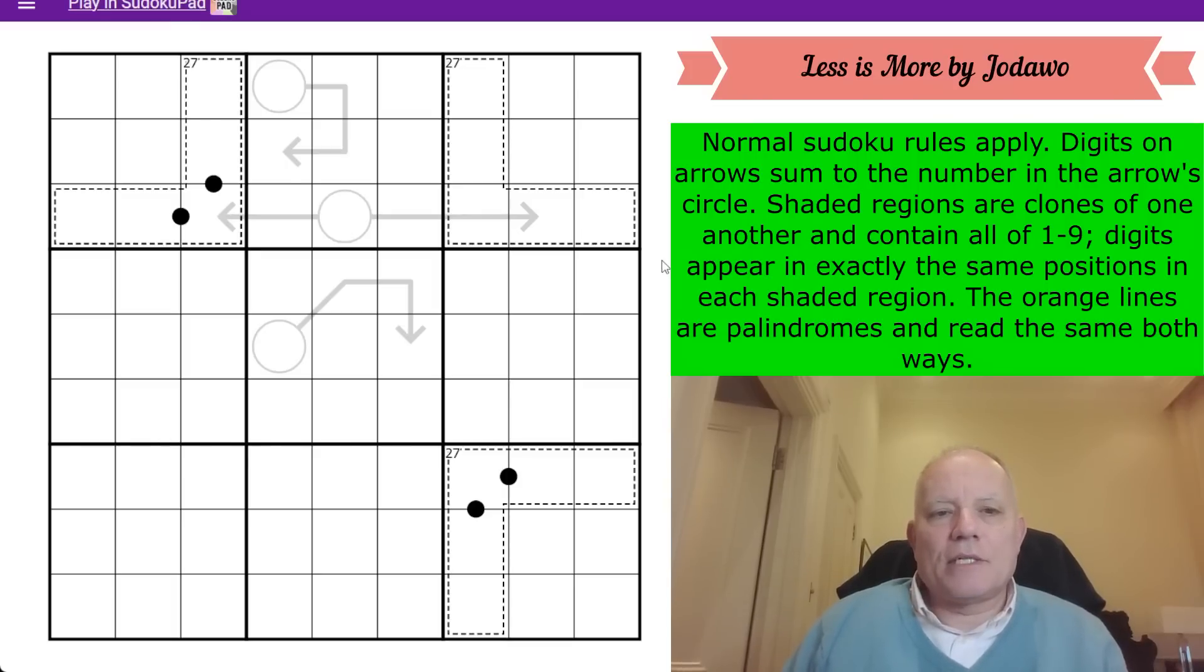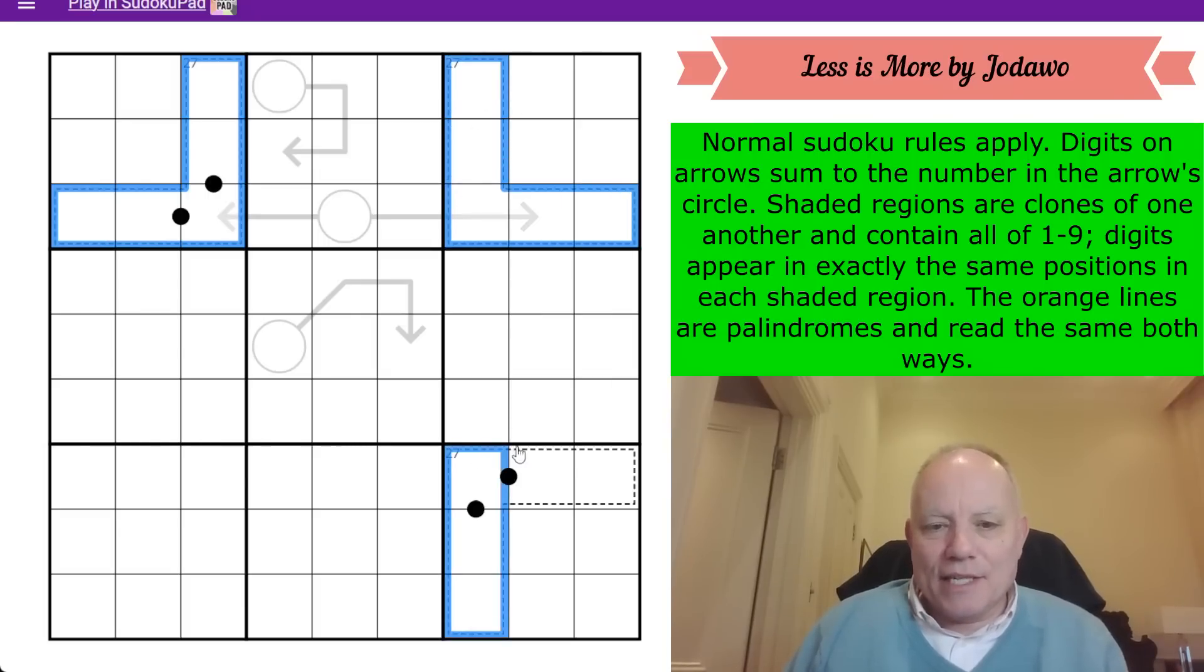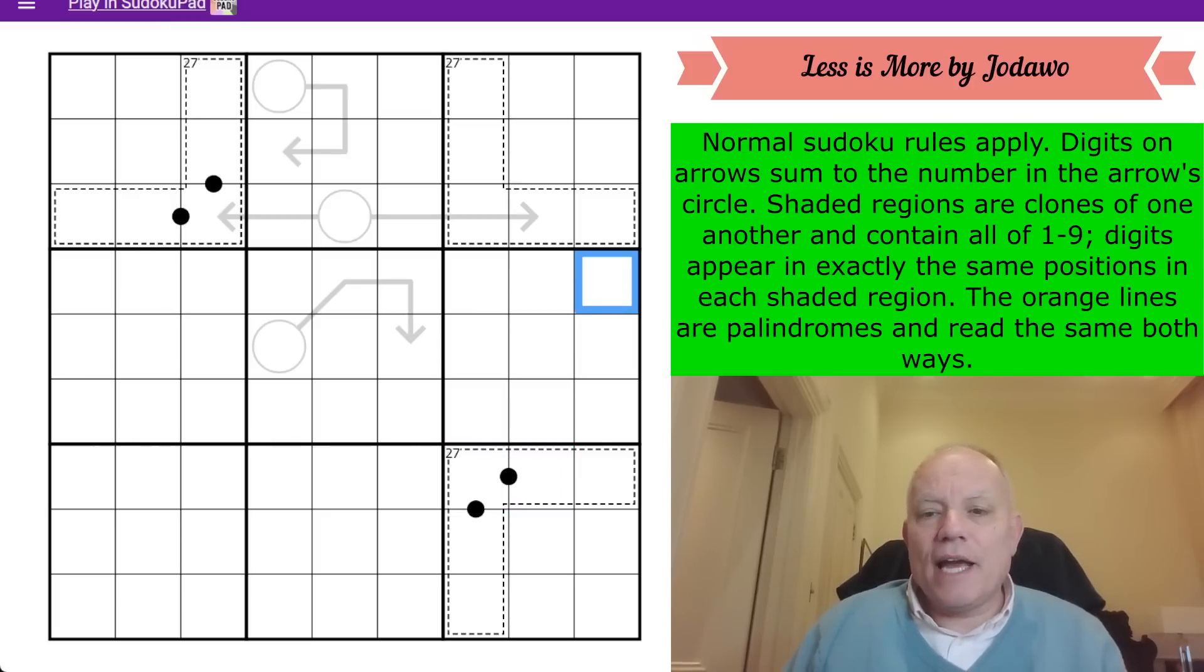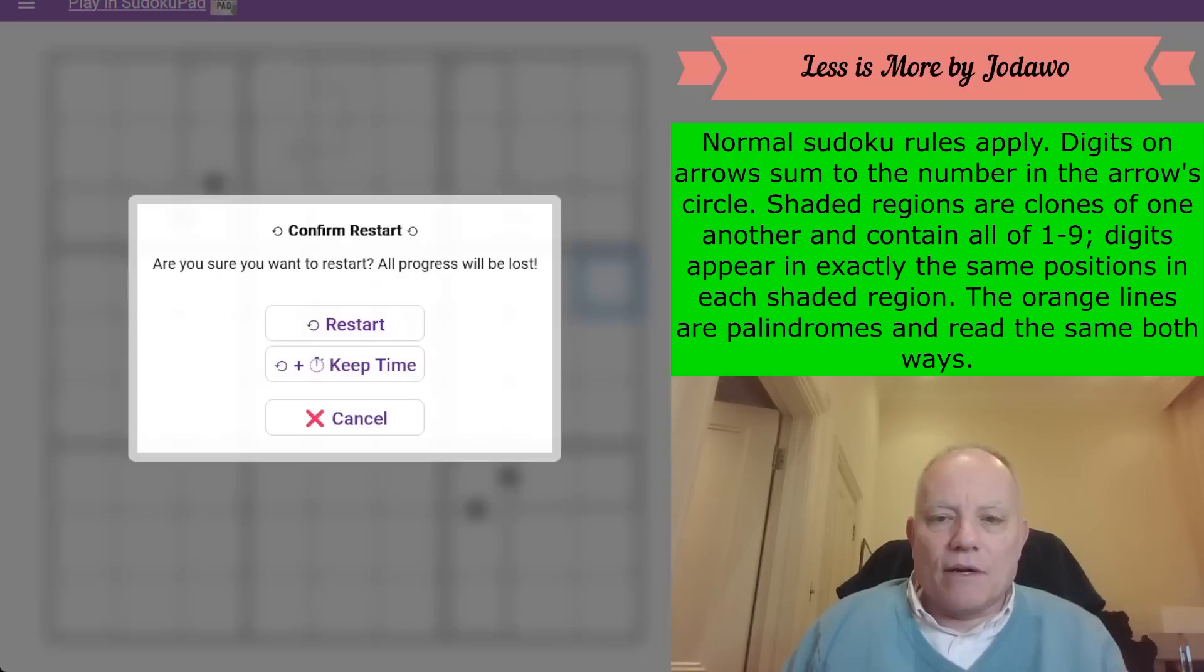Digits along an arrow sum to the digit in the circle. Digits in a cage sum to the total given - there are just three cages, and the total given is 27 every time. A black dot indicates a 1 to 2 ratio between the digits it connects. Those are the rules. Do give it a try on the link under the video. I am going to start now.